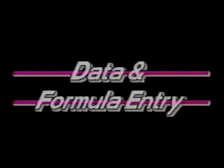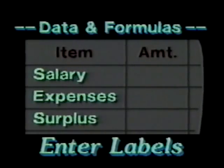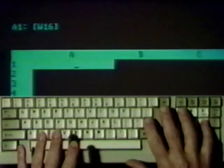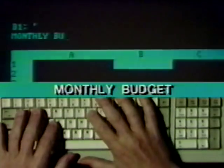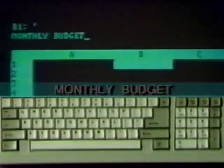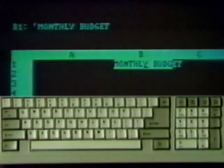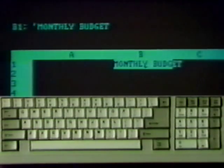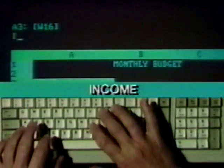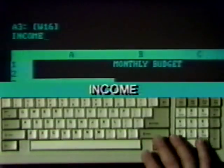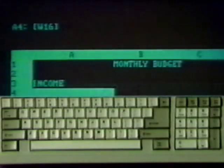The next step is entry of data and formulas. Do the labels first. They're used for row and column headings. With the arrow keys, move the pointer to cell B1 and type the label MONTHLY BUDGET in all caps. As you type, the entry appears in the edit line of the control panel. When done, press Enter and the label appears in the cell. Line one of the control panel shows the complete label. The apostrophe is a label prefix and is supplied by 1-2-3.